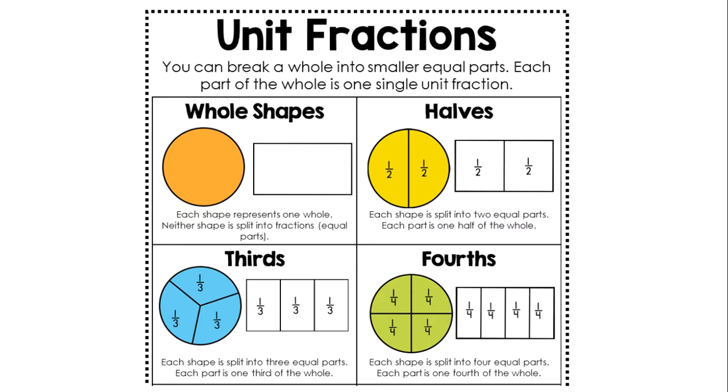You can see here I have two examples of a whole: one whole circle colored in orange and one whole rectangle in white. Each of these is its own separate whole. On its own, it is complete. Neither shape is split into any parts. One whole, one whole.